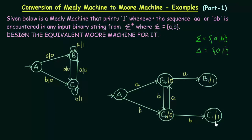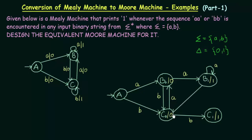We created two new states B1 and C1, so we need to specify their transitions. For state B1, since it is also a state of B, we use the Mealy machine's state B. On input small a, B stays in B with output 1, so B1 goes to B1 itself. On input small b, B goes to C with output 0, so B1 goes to C0.